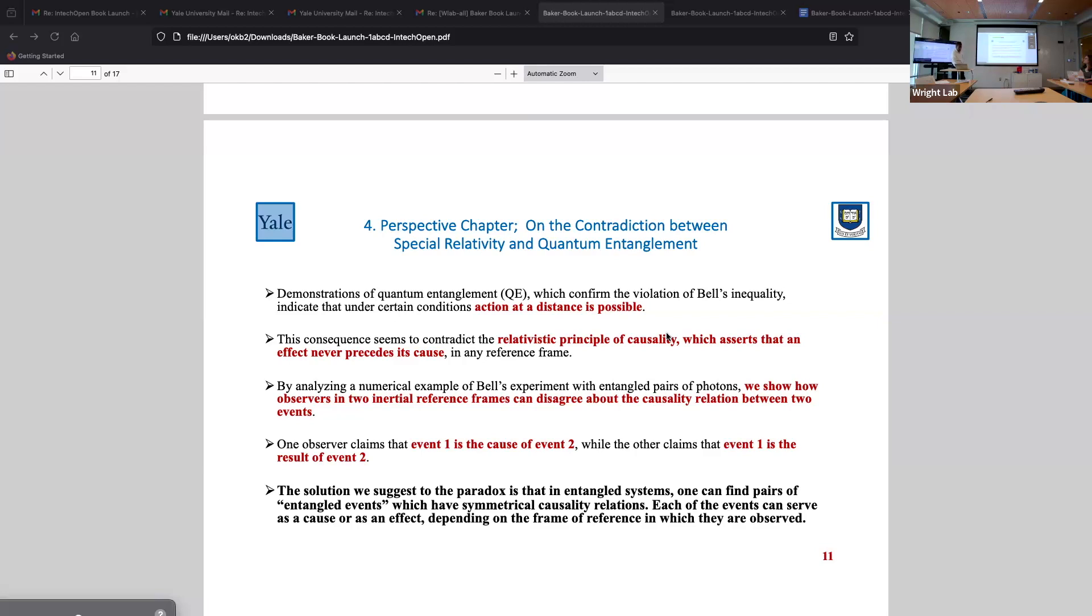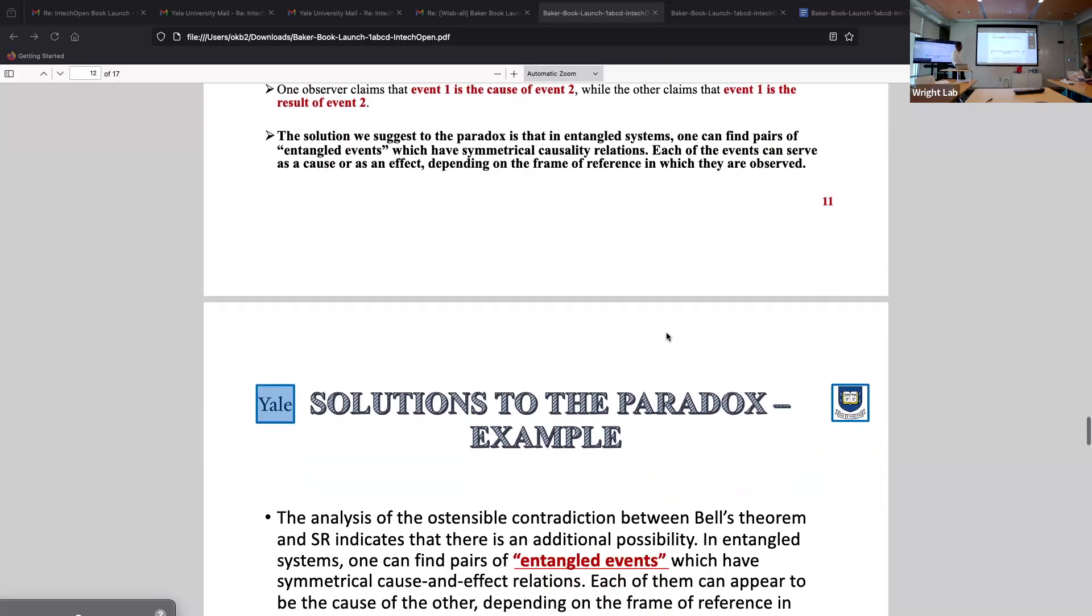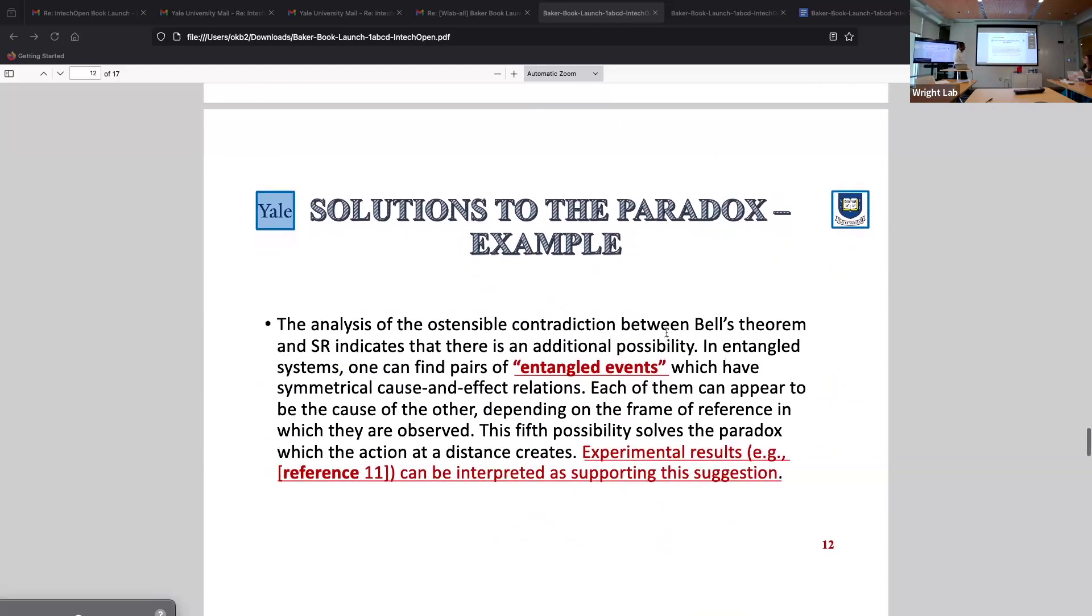So, if you want to get this book and read, you should. Now, and what this is saying is simply the same bit. You can have pairs of entangled events, not just entangled particles, entangled events. Okay. And the experimental results, and you can go to these references and look at them, can be interpreted as supporting this suggestion. That says that there are experiments that can support this.